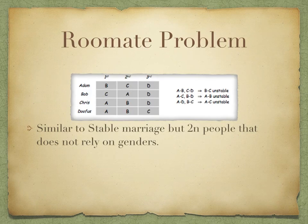Stable pairings do not always exist. A false reasoning to prove this is: we can start with any rogue couple and modify the current pairing so they are together, then repeat. To illustrate the fallacy of this reasoning, we have a related scenario known as the roommate's problem.